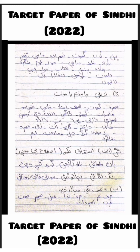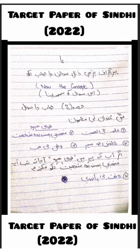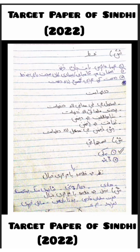The essay titles (unwan) are written here. The important topics for letters (khat) and applications (darkha) — including markazi khyal (central ideas) and khulasay (summaries) — are all written here.